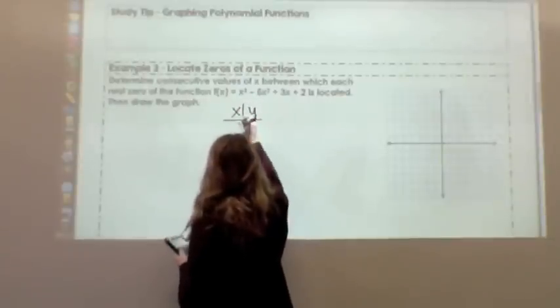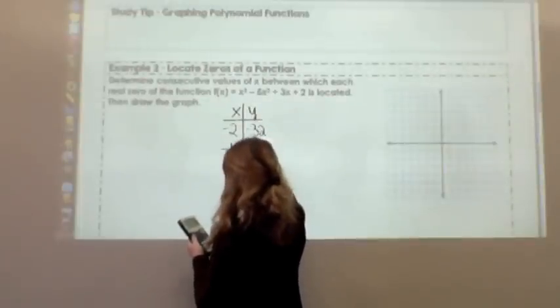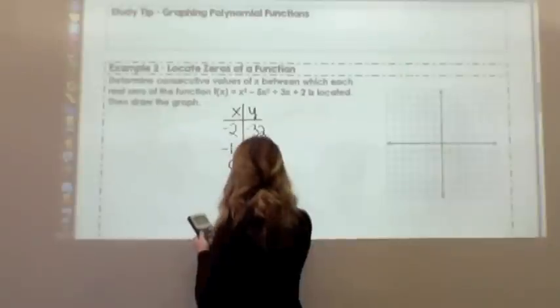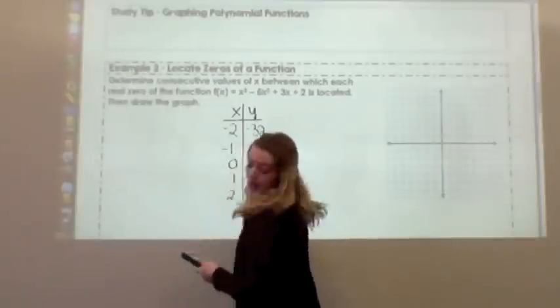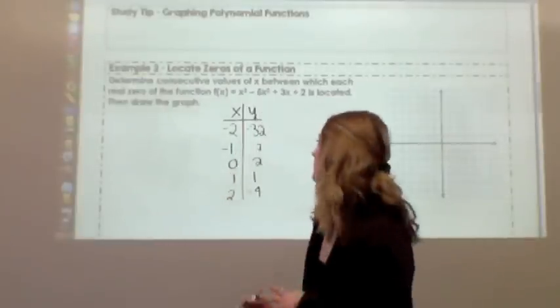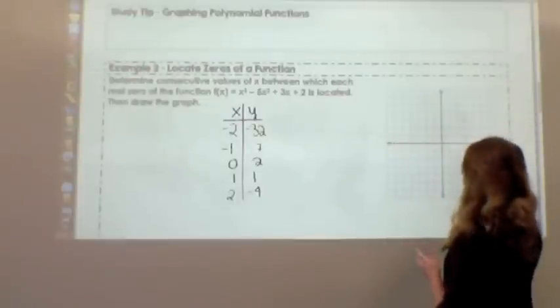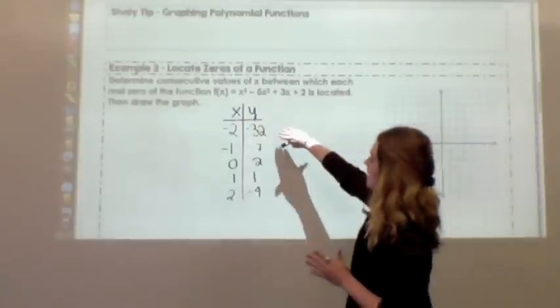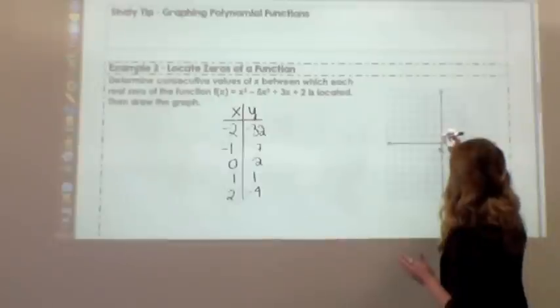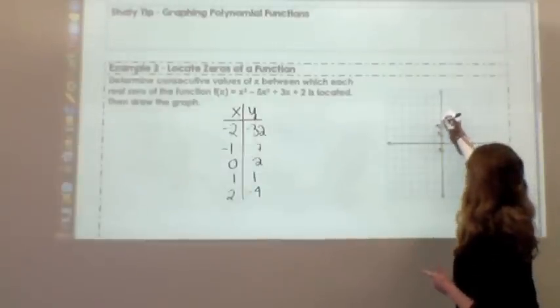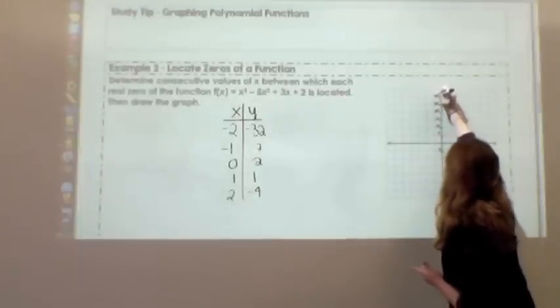And I'm going to write up on my board here an xy table. So if we start at negative 2, that actually gives us a y value of negative 32. At negative 1, we have a y value of negative 7. At 0, we have a y value of 2. At 1, we have a y value of 1. And at 2, we have a y value of negative 4. I actually really like to use my xy tables to figure out what's an appropriate scale on my graph.